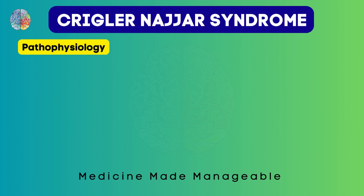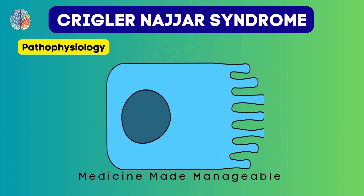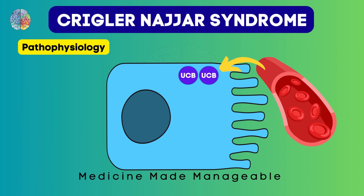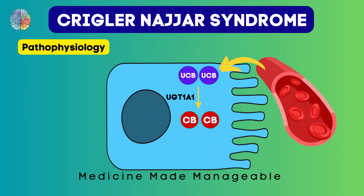Now what is the pathophysiology behind this condition? Take this to be a hepatocyte. Normally, from the blood, the unconjugated bilirubin enters the hepatocyte, and then this unconjugated bilirubin is converted into conjugated bilirubin with the help of the enzyme UGT1A1. Now, if this enzyme is not working, the conjugated bilirubin is not going to be formed, and the levels of unconjugated bilirubin are going to increase.